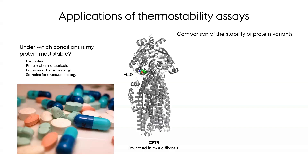Another common application of thermostability assays is to compare different variants. This could be mutations that you have made yourself, or it could be naturally occurring — for example, disease-causing mutations where destabilization of the protein fold is a common disease-causing mechanism. For example, the single point mutation highlighted here is strongly correlated to the appearance of cystic fibrosis.